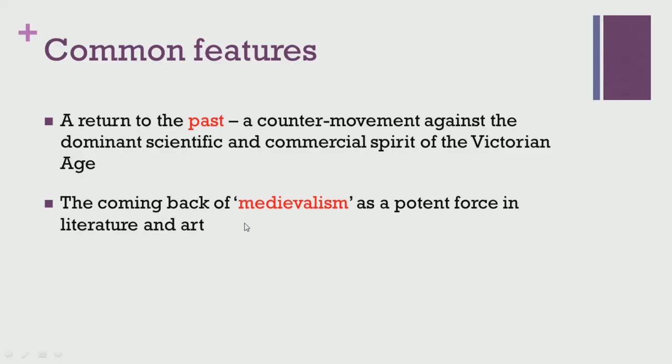Perhaps they were quite weary of the way in which commercial establishments were taking over, and perhaps they were not initially aware of the ways in which all of these could threaten the very foundations of their being. Another significant thing, which could also be seen as an extension from the early Romantic period, is a comeback of medievalism. This serves as a potent force in literature and art of the Victorian period, though some of these tendencies may not be uniformly visible given that Queen Victoria reigned for about 63 years.